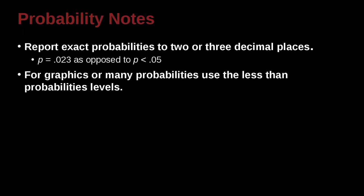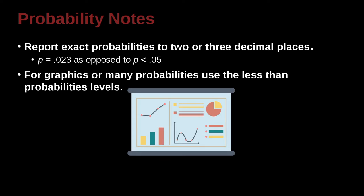If you have a graphic, a figure, or you have many probabilities, that is, you know, more than just a few, many, then in that case, you can go ahead and use the p less than .05, .01, .001, because that makes it easier to understand.